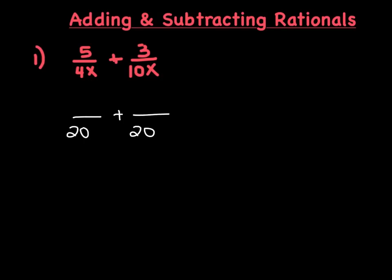Since they both have an x in the denominator, we're going to also include the x in our common denominator. So now what you want to do is look at the original denominator and say, what do I need to multiply this by to get it to become 20x? Well, you just have to multiply it by 5. So if we multiply the denominator by 5, let's also multiply the numerator by 5. So then 5 times 5 is 25, so we're left with 25 over 20x.